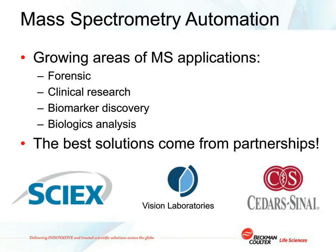Moving more specifically to mass spectrometry automation: mass spec is obviously growing as an analytical tool in a variety of areas. We'll touch on applications developed in forensics, clinical research, biomarker discovery, and biologics analysis. Beckman Coulter is not a mass spectrometry company, so it's key that we develop these solutions with various partners. One of our main collaborators is SciEx, which is a sister company under the Danaher umbrella. We also have collaborators including Vision Laboratories and Cedars-Sinai Medical Center, whose data we'll be showing today.